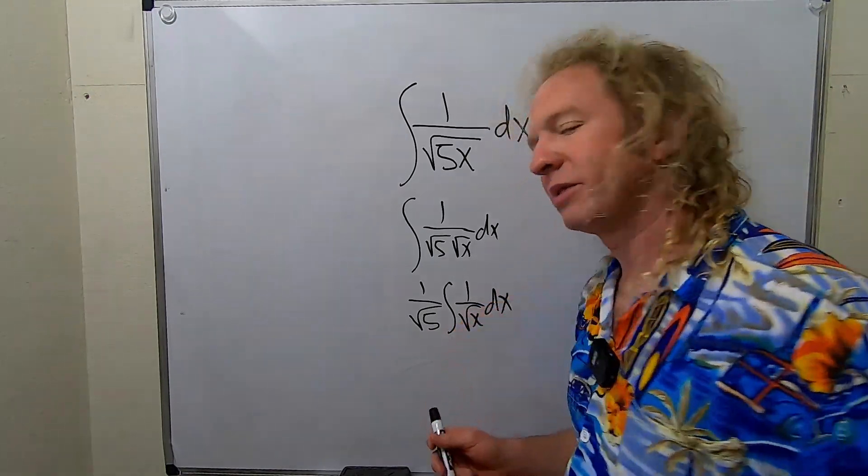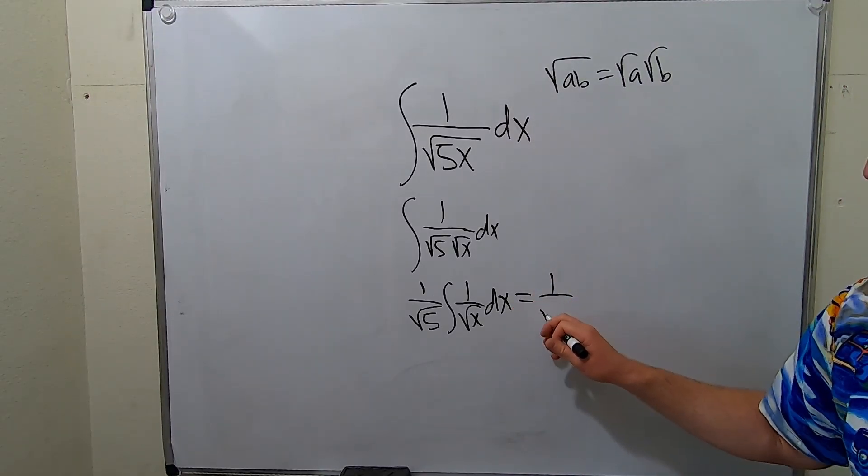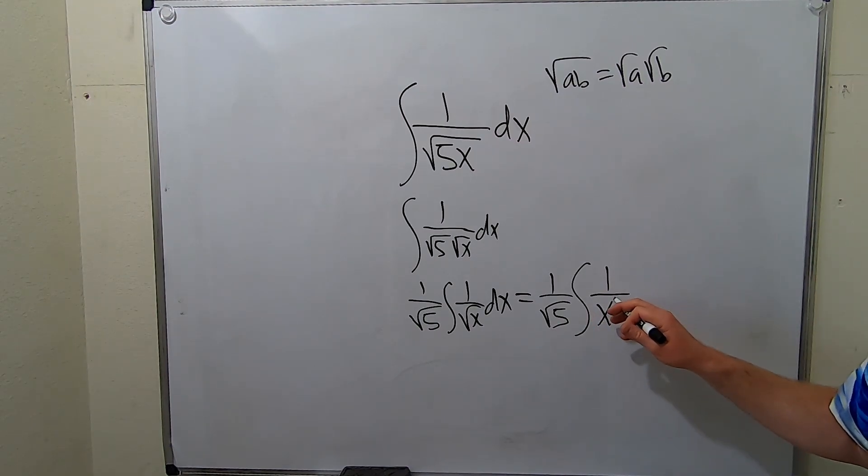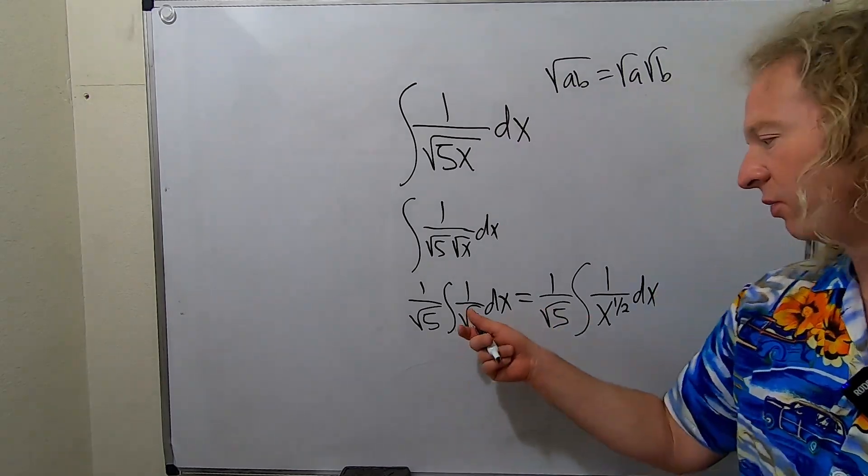And then you can write this as x to a power. So this is 1 over root 5, integral 1 over x to the 1 half. Because the square root of x is the same thing as x to the 1 half.